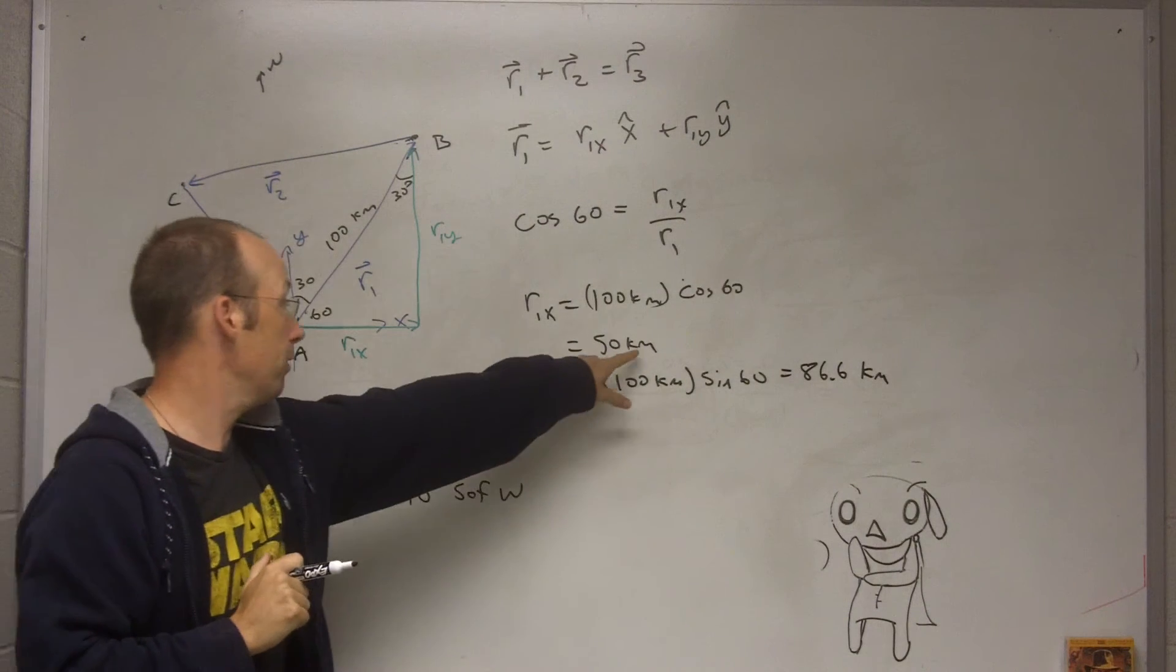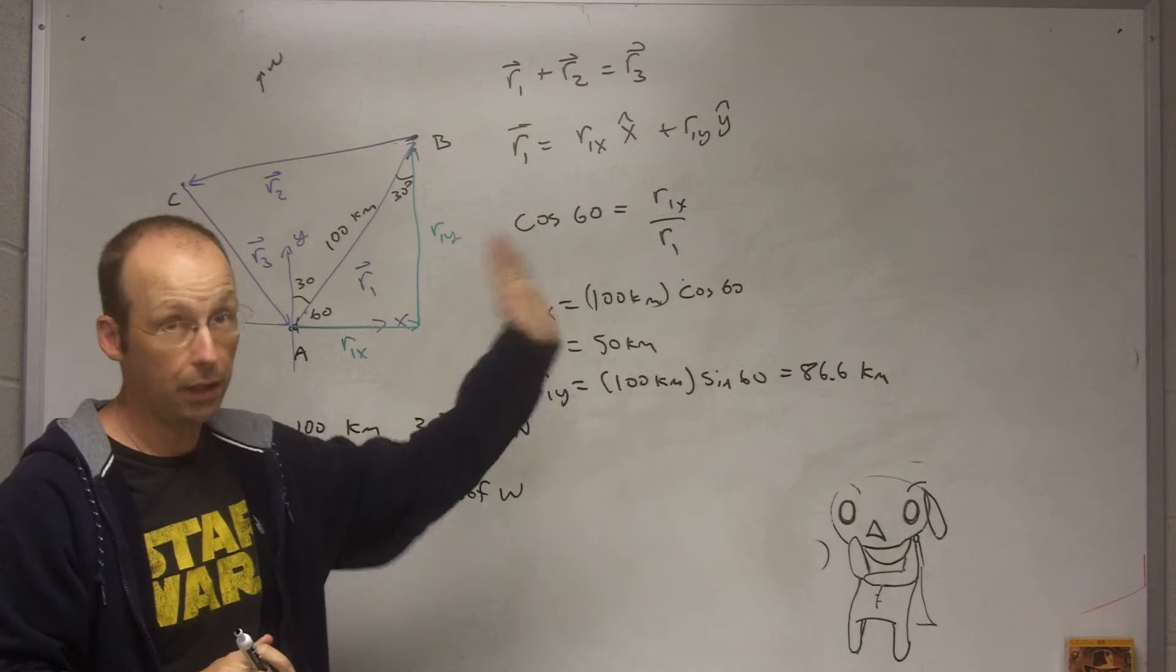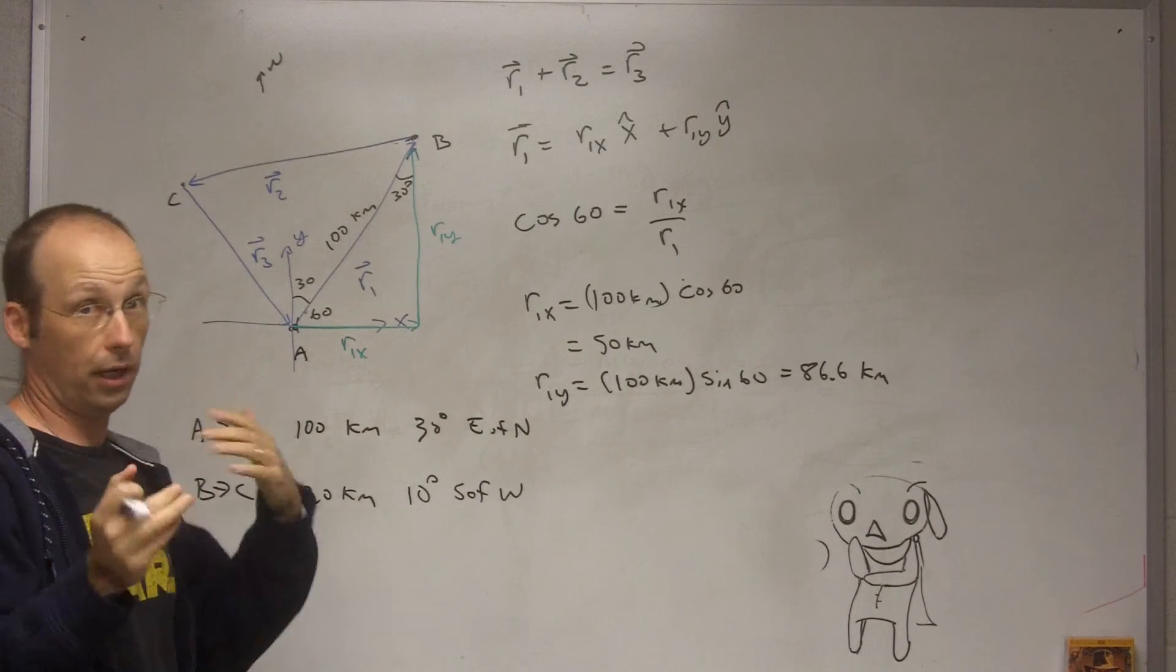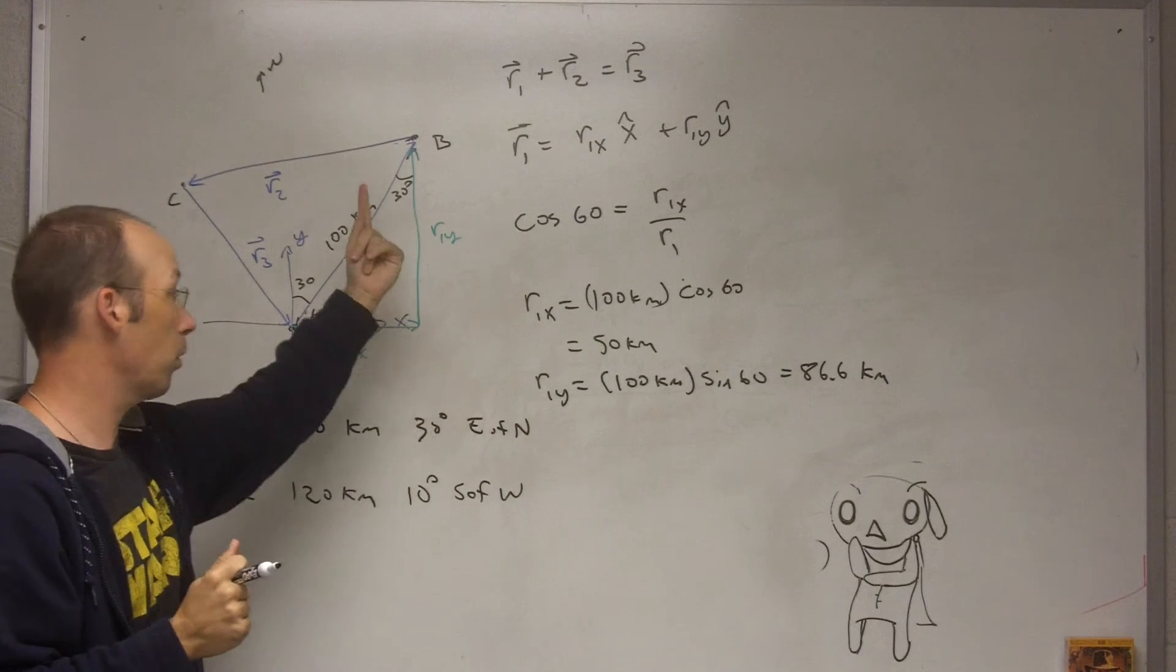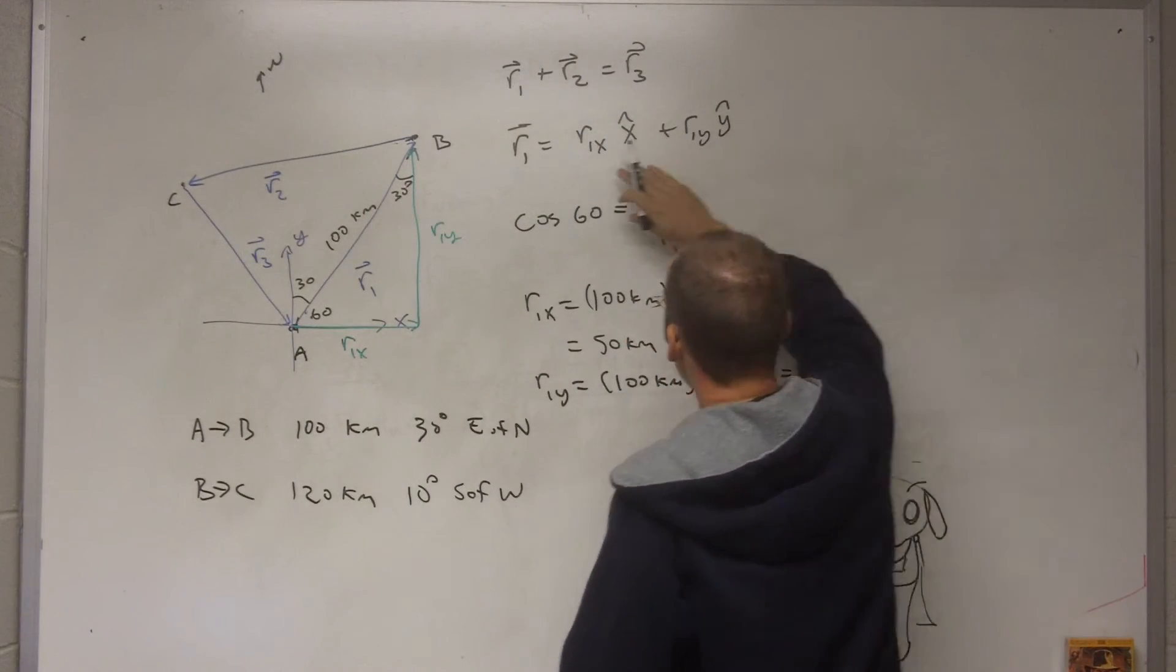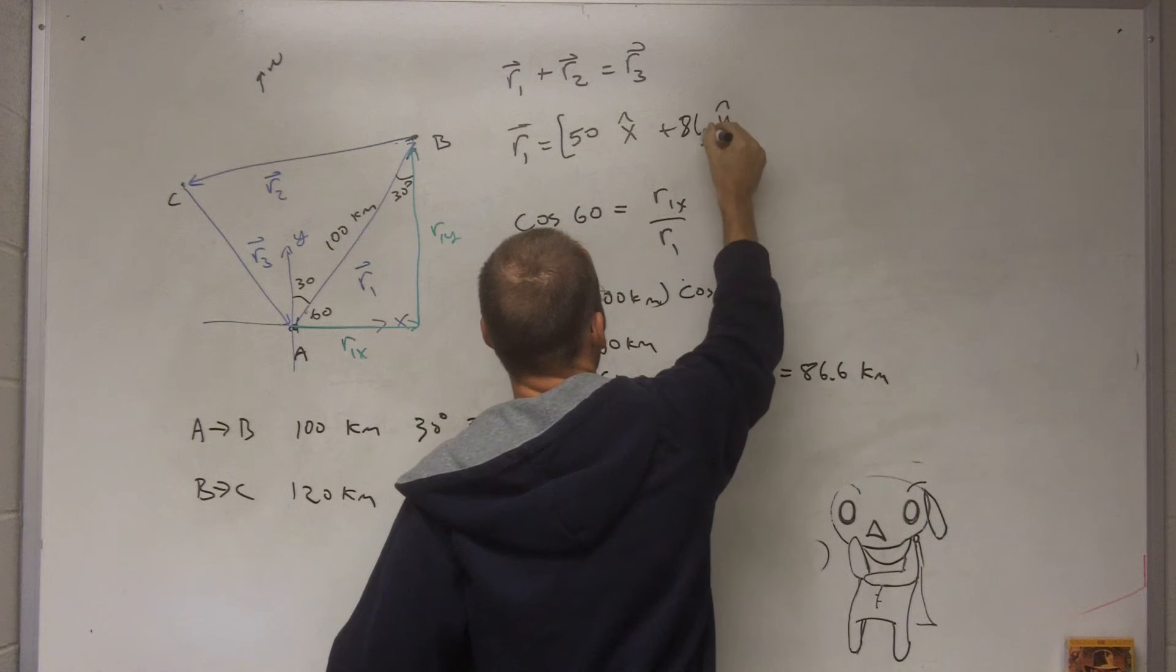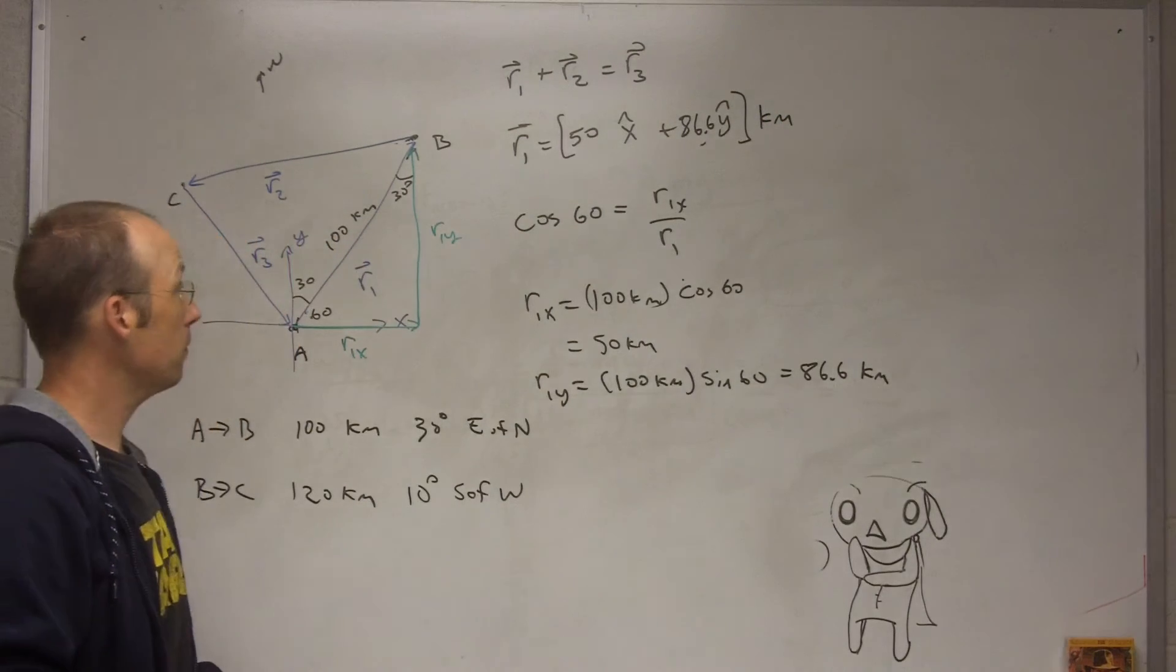86.6 kilometers. Now remember a couple important things. It still has units, don't leave off the units because that's just plain wrong. Two, we need to think about the sign. Are these in the positive x and positive y direction or negative? In this case r1x is in the positive direction and r1y is in the positive direction. So I can go ahead and write r1, let me just use my magic here, 50 x-hat plus 86.6 y-hat kilometers. So now I have r1.